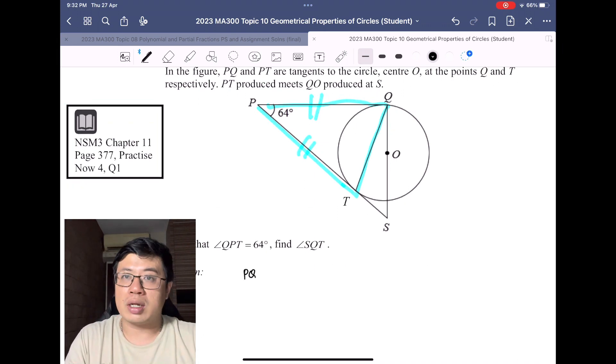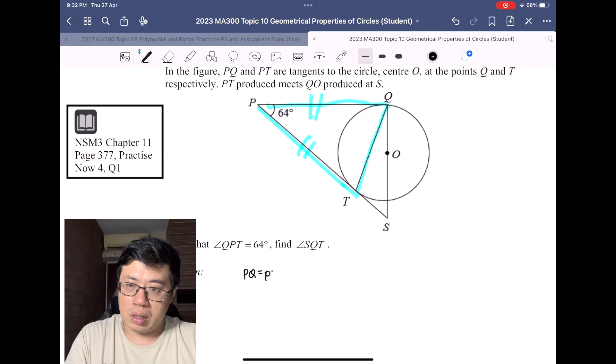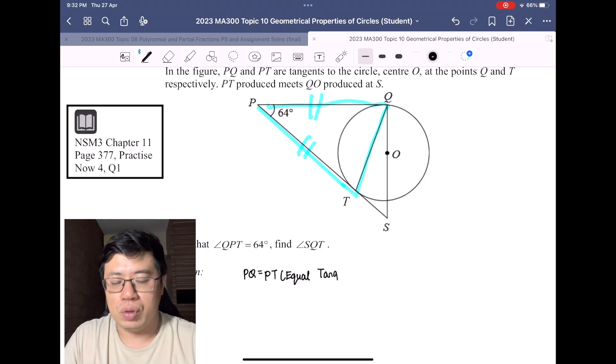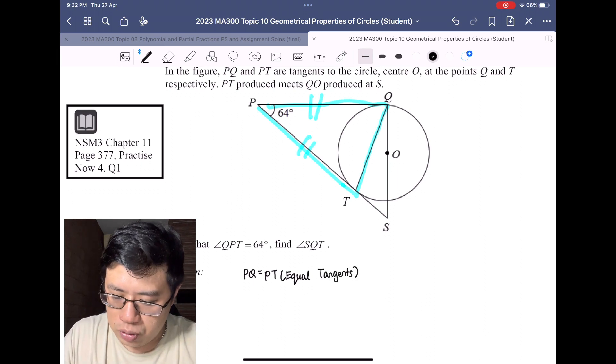So without further ado, let's write down: PQ will be equal to PT because these are what we call equal tangents. Write down the property that you use every time. This is equal tangents.